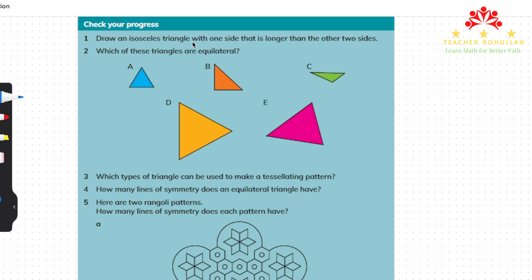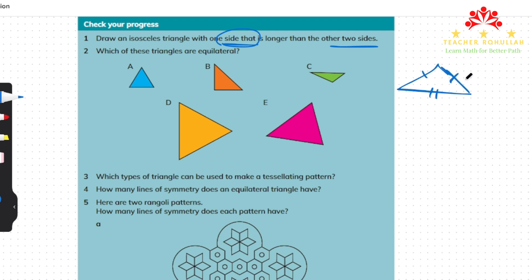The first question says: draw an isosceles triangle with one side that is longer than the other two sides. An isosceles triangle is a triangle in which two sides and two angles are equal. The side that is longer than the other two is the unequal one. For example, this is the longer side and these two sides are the shorter, equal ones.